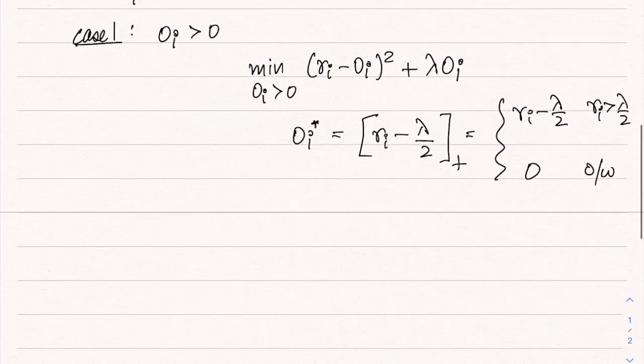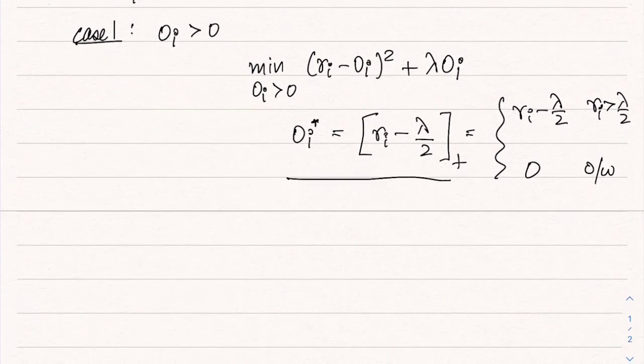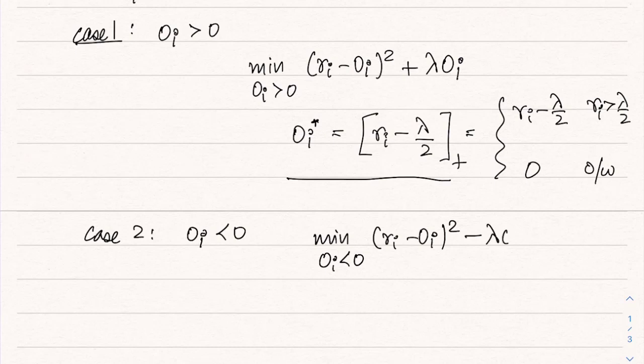O_i star is equal to this quantity. In the same way, if we assume that O_i is less than 0, then we can solve the problem with O_i less than 0: (r_i minus O_i) squared minus lambda times O_i. So O_i star in this case would be r_i plus lambda by 2 provided that r_i plus lambda by 2 is actually negative. And it would be 0 otherwise. If this quantity is positive, it would be 0.